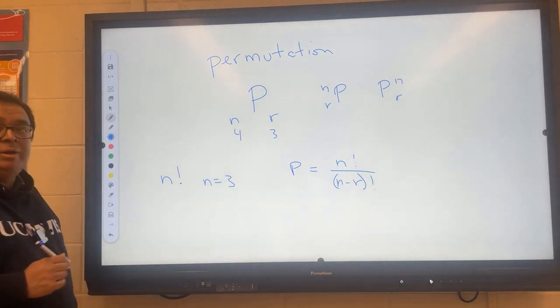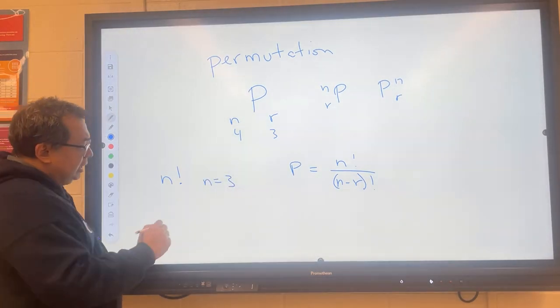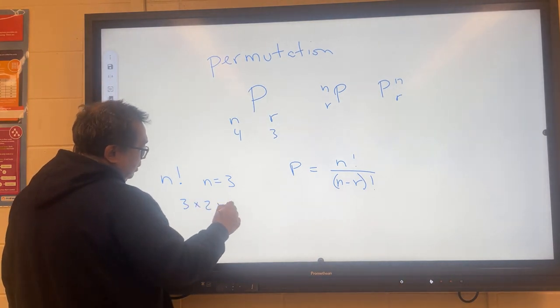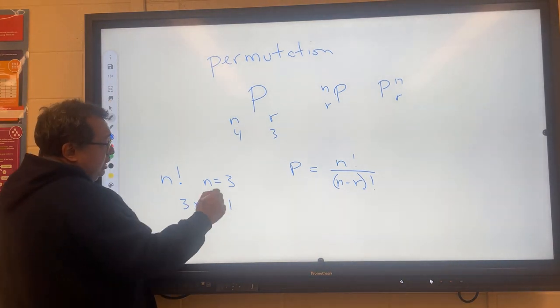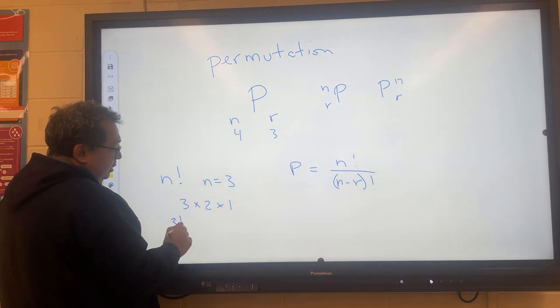who can tell me how do I evaluate n factorial? Okay, so we're going to do 3 times 2 times 1, like that. So this would equal 6. A 3 factorial would equal 6.